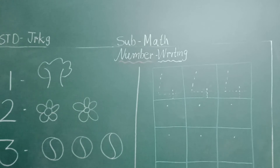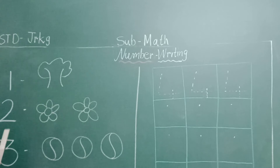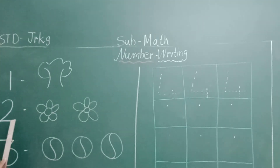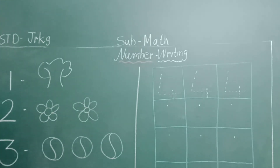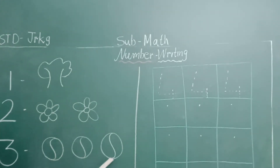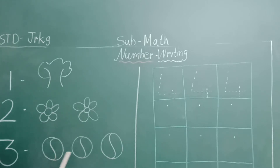Next, what comes after number 2? 3. Number 3 — how many balls are there? 3 balls. 1, 2 and 3.